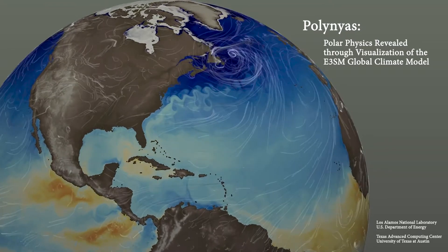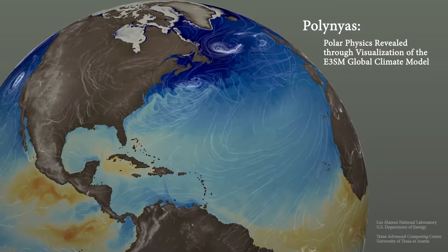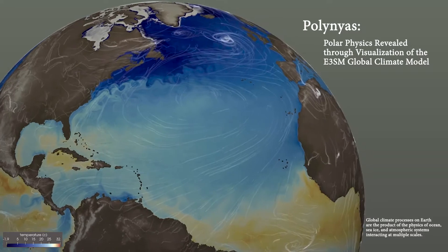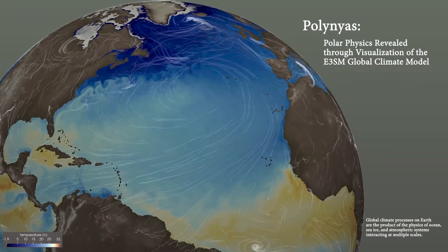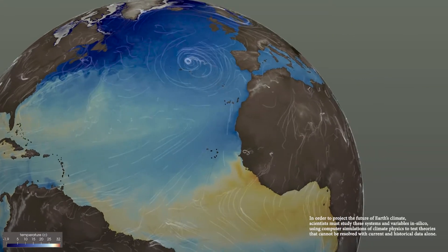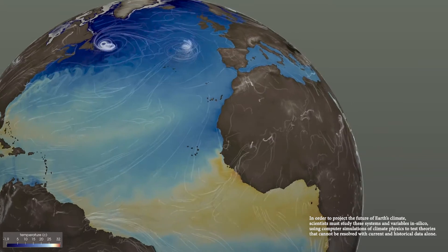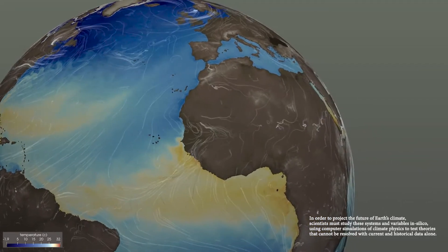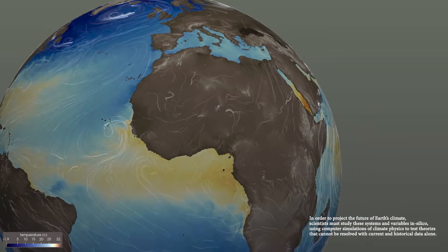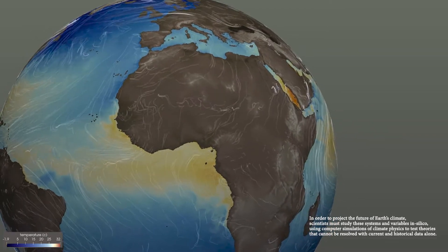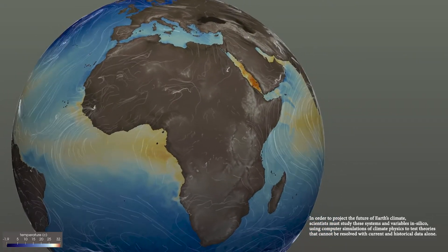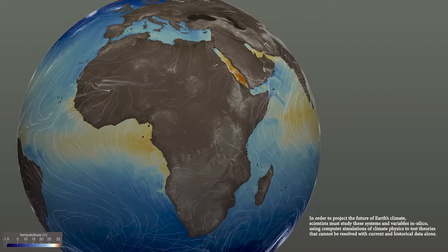Global climate processes on Earth are the product of the physics of ocean, sea ice, and atmospheric systems interacting at multiple scales. In order to investigate the future of Earth's climate, scientists must study these systems and variables in silico, or using computer simulations of climate physics to test theories that cannot be resolved with current and historical data alone.